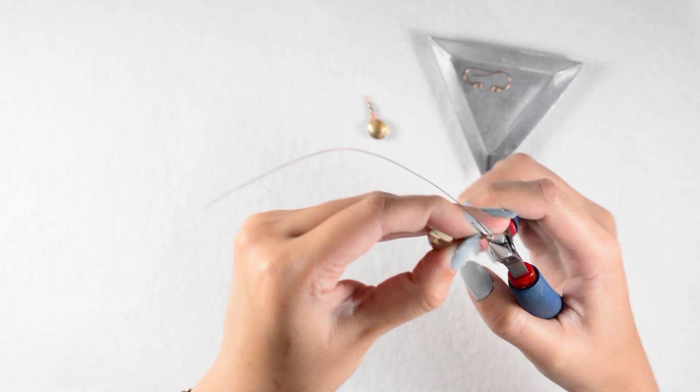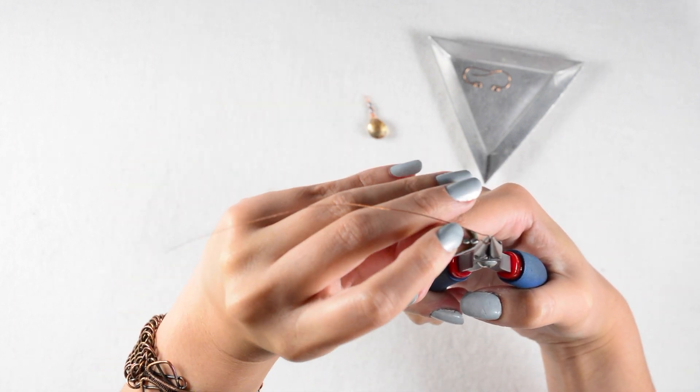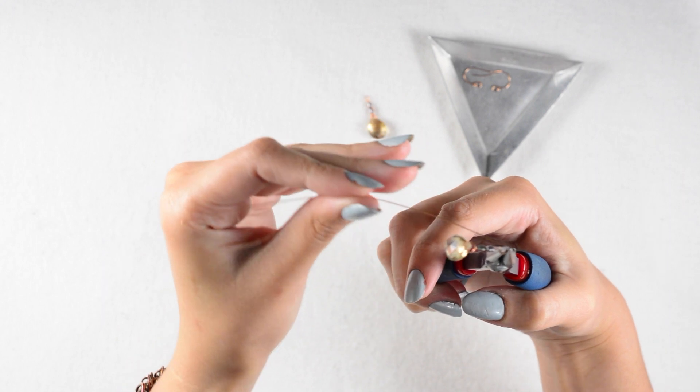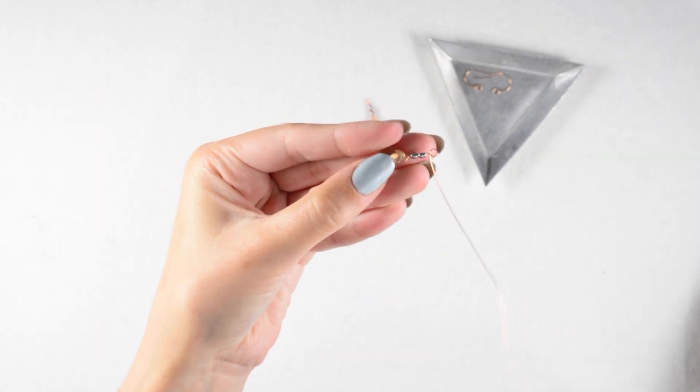So for that first earring, when I did my top loop, I wrapped my tail over the base wire and continued my coil. And for the second earring, I will wrap my tail under that base wire, so when I do my wrap it will be going in the opposite direction as that first earring.